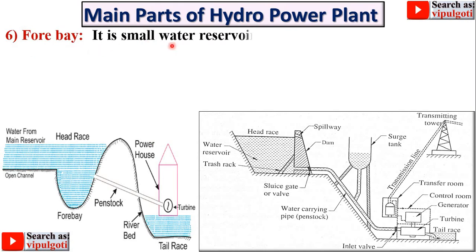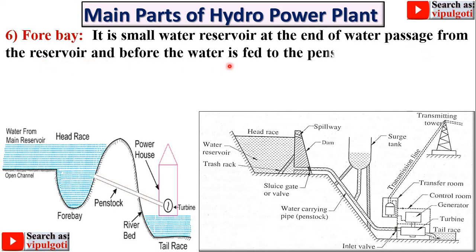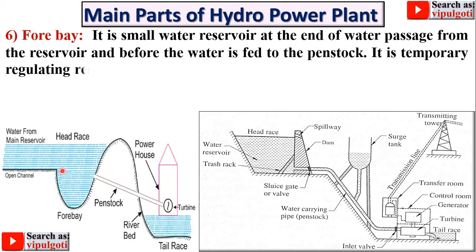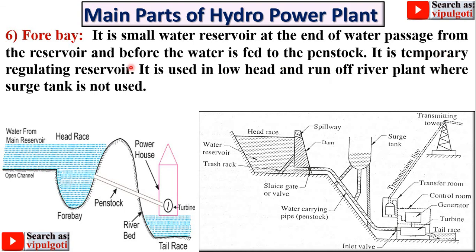Next part: forebay. It is a small water reservoir at the end of the water passage from the reservoir and before the water is fed to the penstock. Here you can see this one is the forebay, before the penstock. It is a temporary regulating reservoir, used in low head and run-of-river plants where a surge tank is not used.